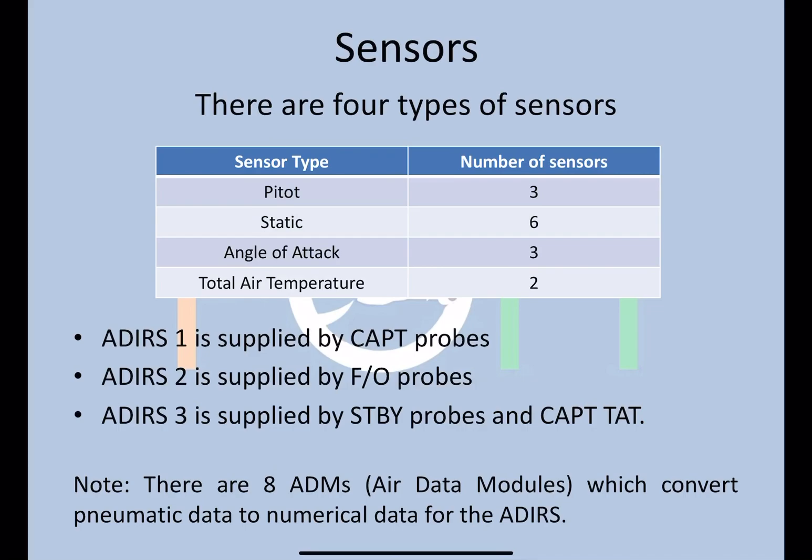ADIRS-1 is supplied entirely by the captain-side probes, ADIRS-2 by the first officer probes, and ADIRS-3 has its own standby probe. Since there are only two total air temperature probes, ADIRS-3 takes its total air temperature reading from the captain's probe.